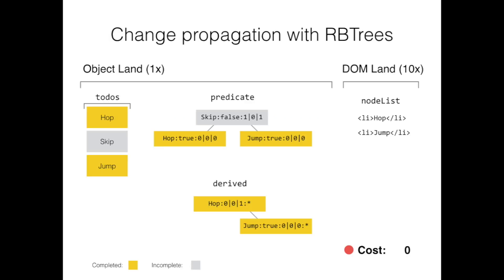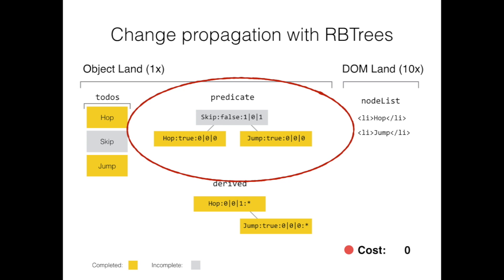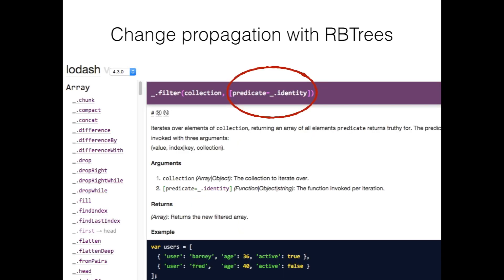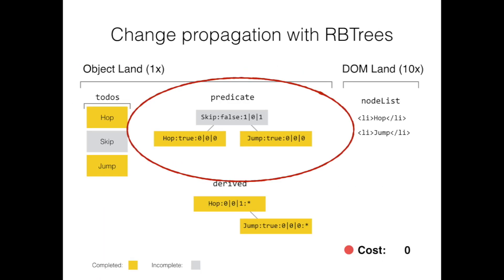Okay, so let's put this all together. We have our source list of to-dos, the predicate and derived trees, and the resulting DOM. In the bottom right, we'll track a theoretical cost of each operation. We'll say that changes in object land cost 1 unit, while DOM changes cost 10 units. The predicate tree stores the result of calling the filter function for each item in to-dos — that's why true and false are saved on each node.